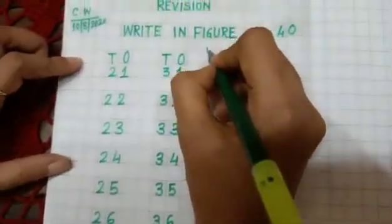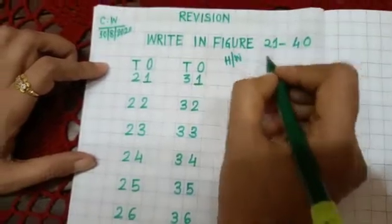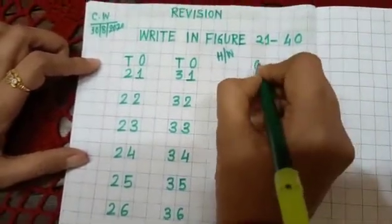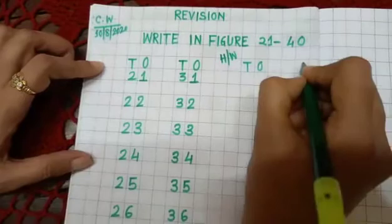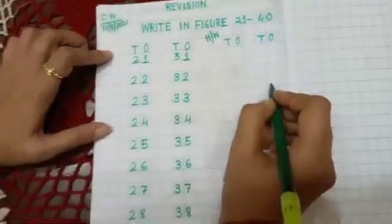And here you will write H oblique W homework. Okay, under ones, tens, ones, tens. Okay children, thank you.